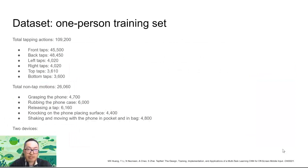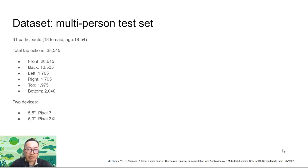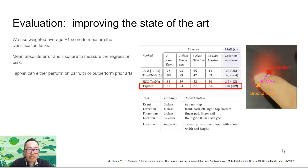We collect a one-person training dataset, meaning that TapNet is trained on data from only a single person. We then collect a multi-person test set, so our model is evaluated on multiple persons. We use weighted average F1 score to measure classification tasks, and mean absolute error and R² to measure the accuracy of regression tasks.